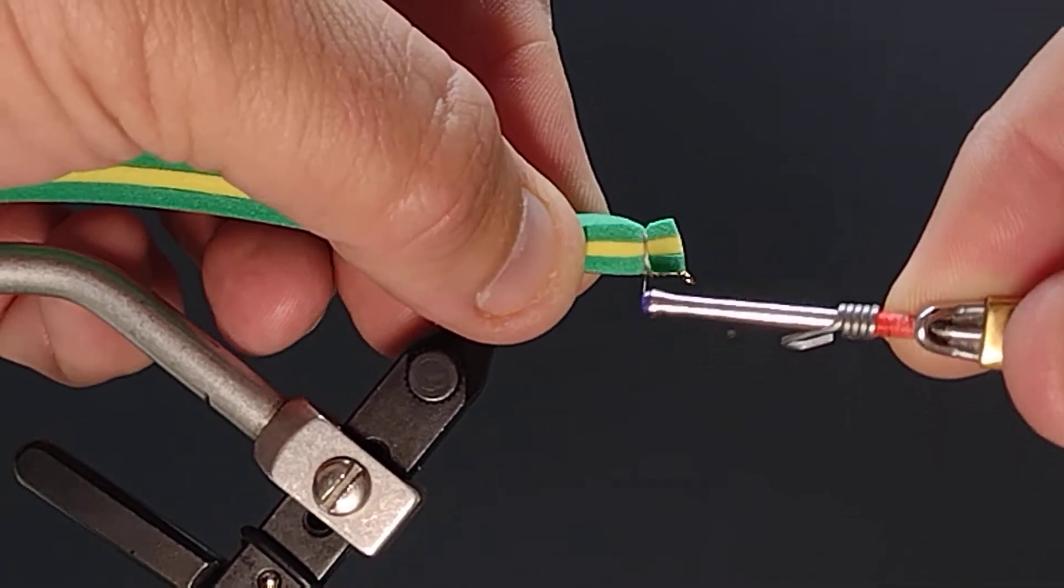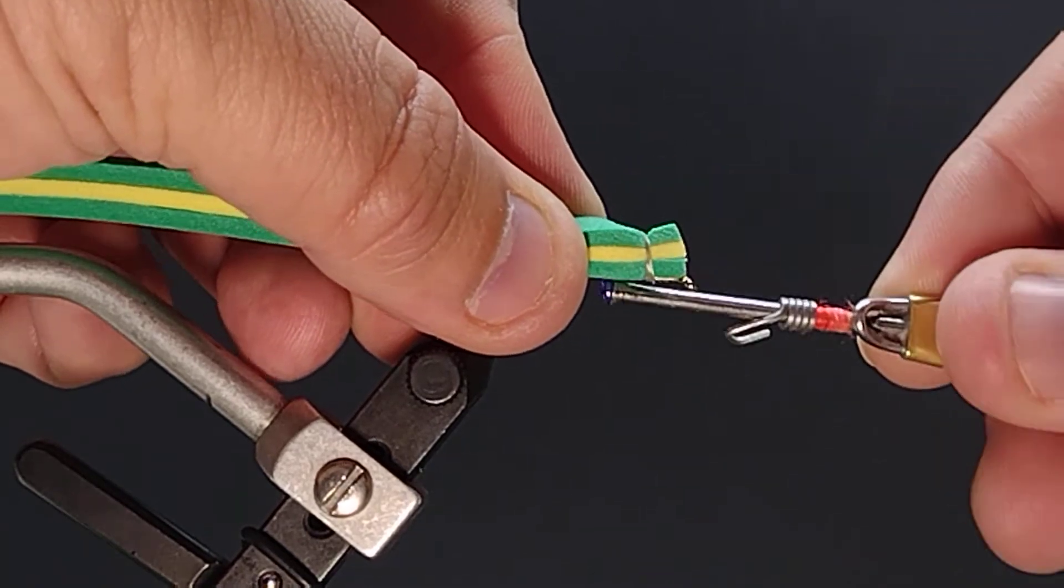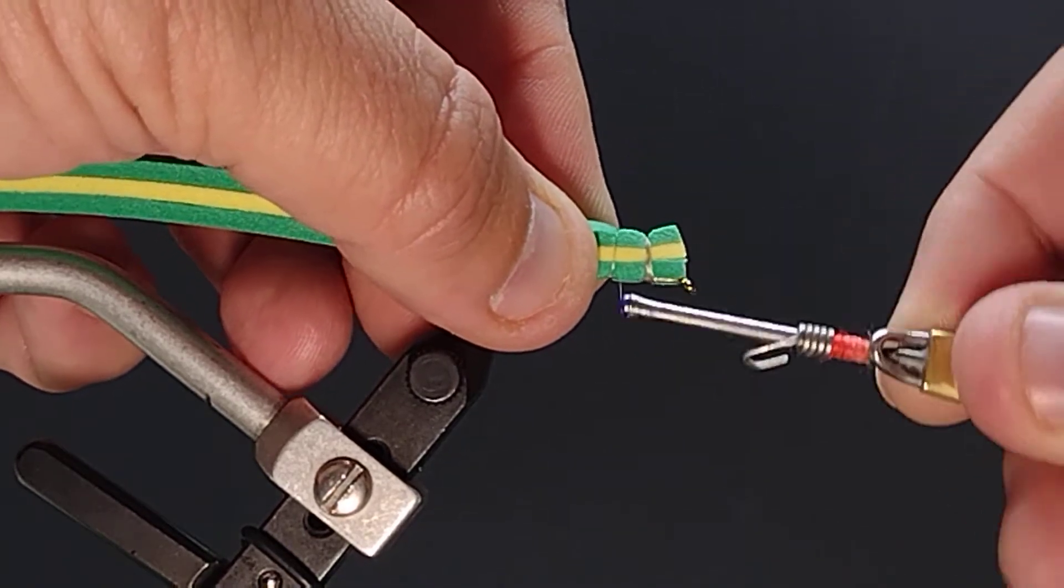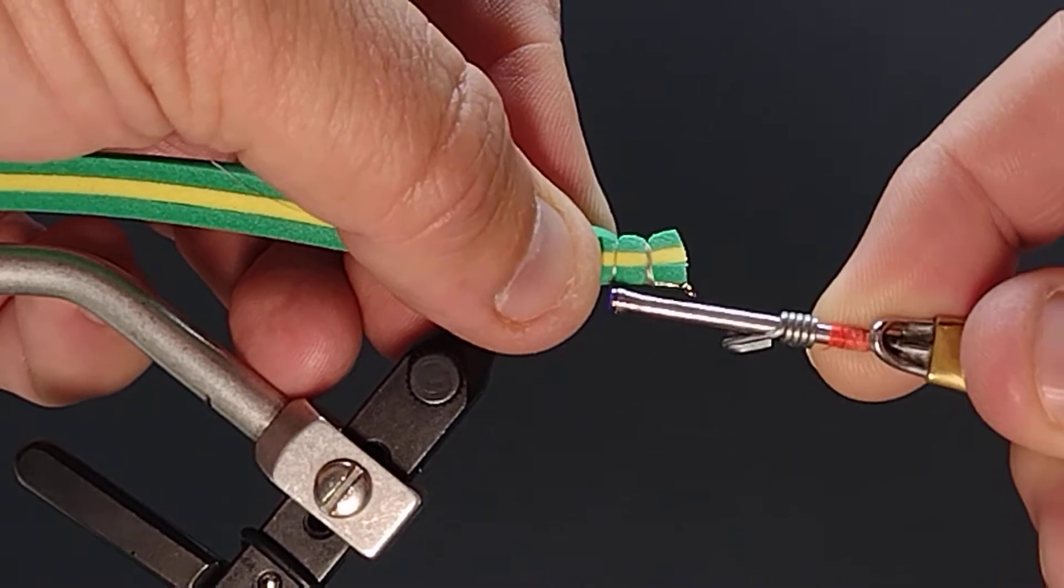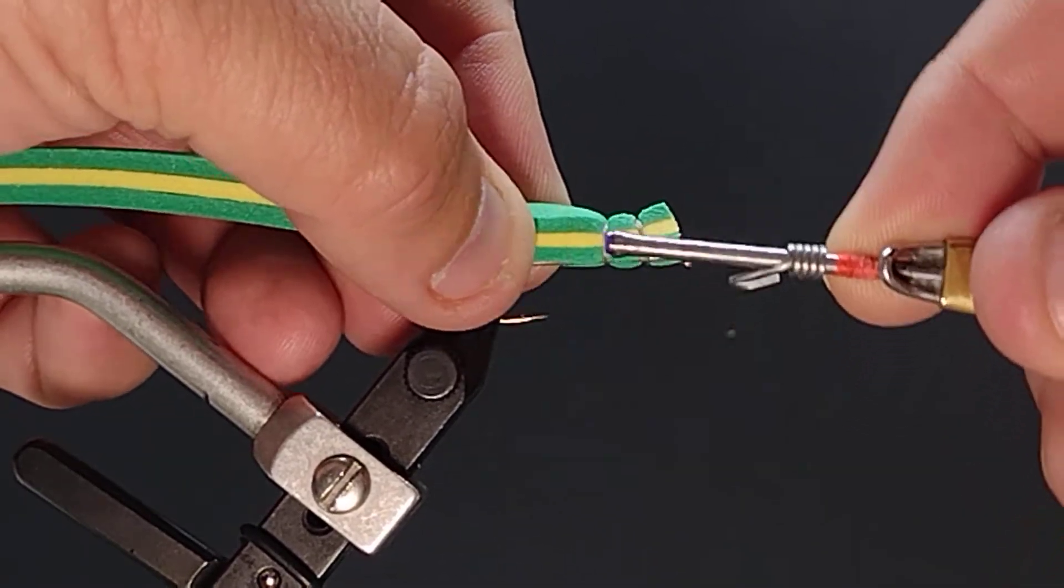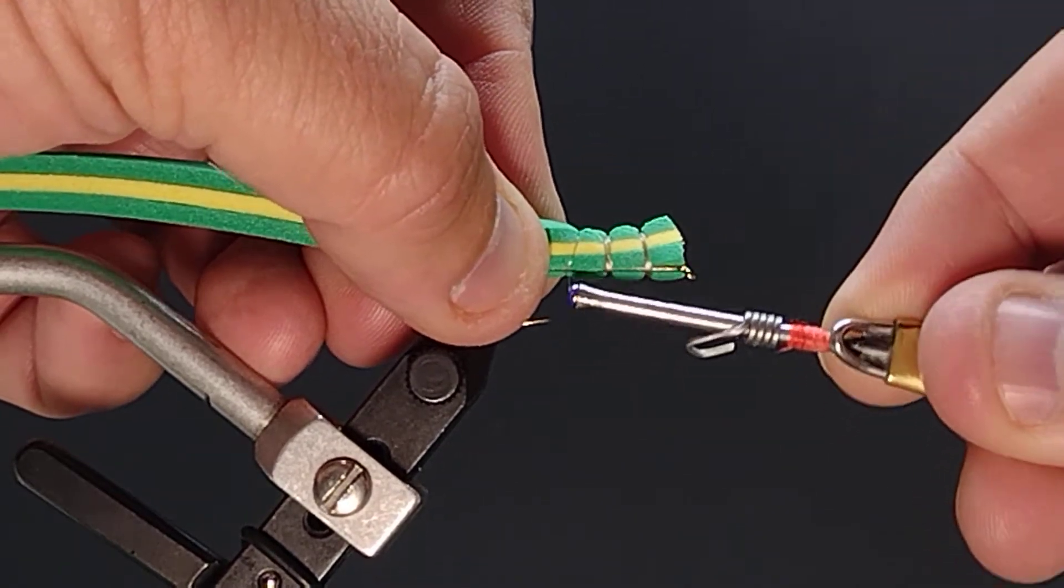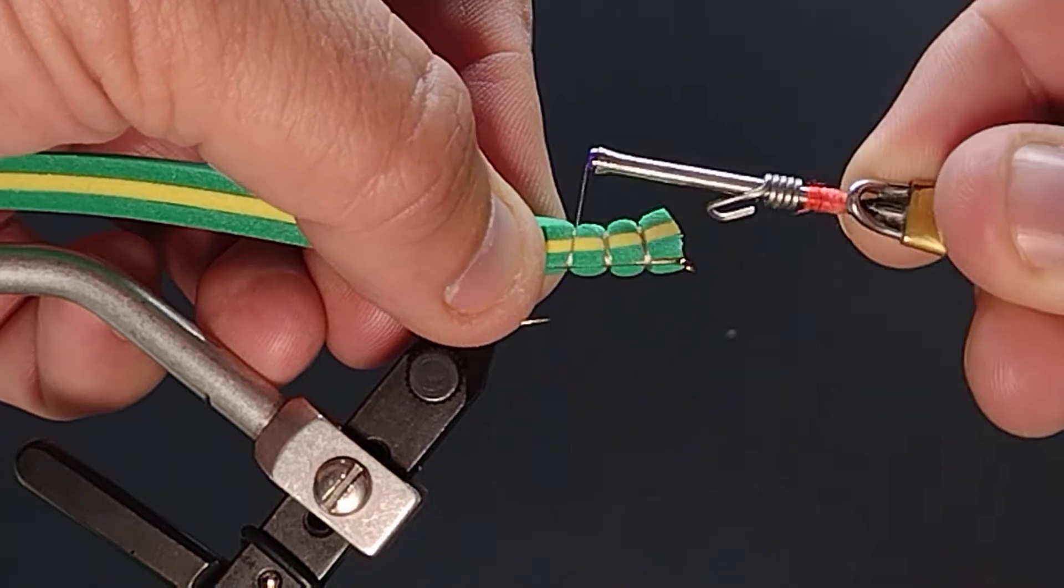You want to kind of pinch this a little as you go and then cross over the top and start your next segment. A little bit of compressing that foam will help. We're just going back making each different body segment.